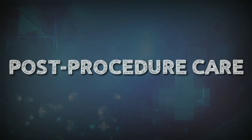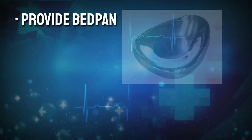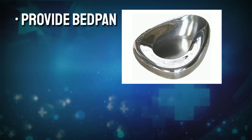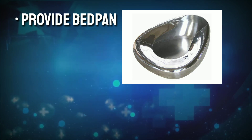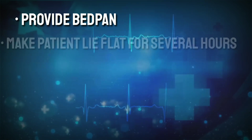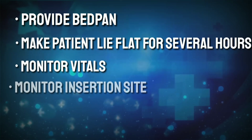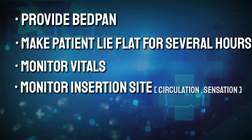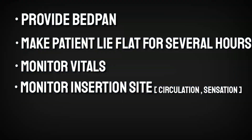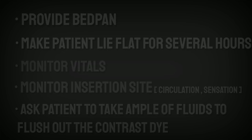Shift the patient to the recovery room and immediately provide a bedpan, since the patient may feel the urge to urinate because of the effects of contrast dyes and increased fluids. Ask the patient to lie flat in bed for several hours. Regularly monitor vital signs, the insertion site, and circulation and sensation in the affected arm or leg. Encourage the patient to drink water and other fluids to help flush out the contrast dye from the body as soon as possible.